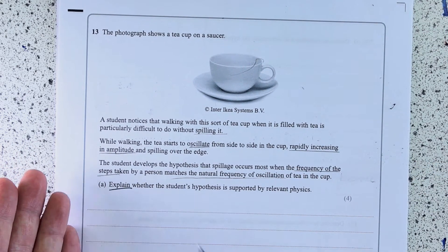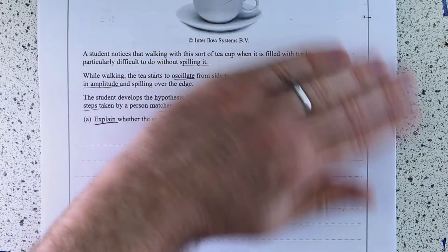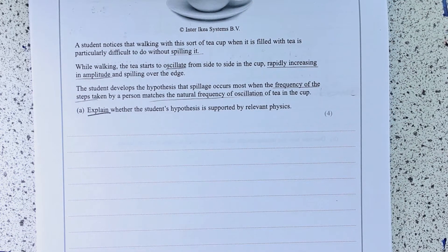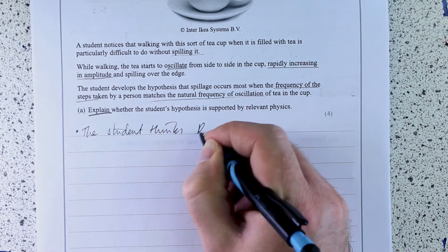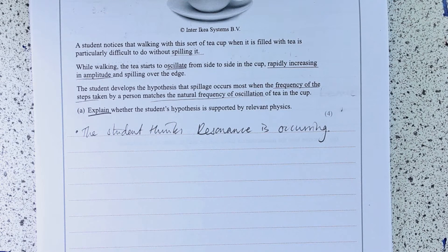So explain whether the student's hypothesis is supported by relevant physics. So basically, what is the physics that they're talking about? Well, this is about resonance. So the student thinks resonance is occurring. You've given us the clues.